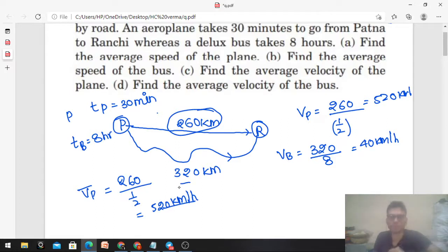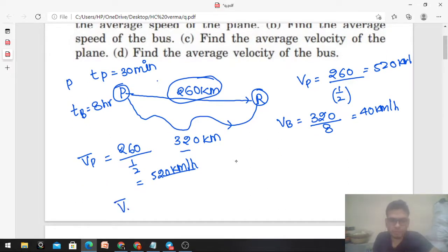Fourth, interesting: Find the average velocity of the bus. Now we have the average velocity of the bus. What is the total displacement? You can see displacement for the bus will be 260 kilometers because displacement is the shortest path between two points, Patna and Ranchi. The shortest distance is the displacement. So although the bus has traveled actual path 320 kilometers, the distance will be 320 but the displacement will remain same, that is 260.